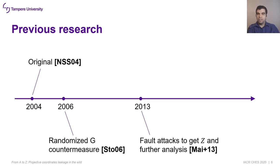Unfortunately, the number of previous works on this attack is small. The pioneering work was presented in 2004, then it was analyzed two years later. One interesting countermeasure proposed in that work is based on randomizing the generator point — we later demonstrate that it doesn't prevent the attack. Later, in 2013, the attack scenario was considered when projected coordinates are gathered using fault attacks. That work also analyzed the Montgomery ladder, concluding that it offers protection against this attack. As part of our research, we demonstrate that the Montgomery ladder does not protect as previously believed. This small body of prior work makes us wonder how well this attack is known in academia and industry, especially since two of these three papers share one author.